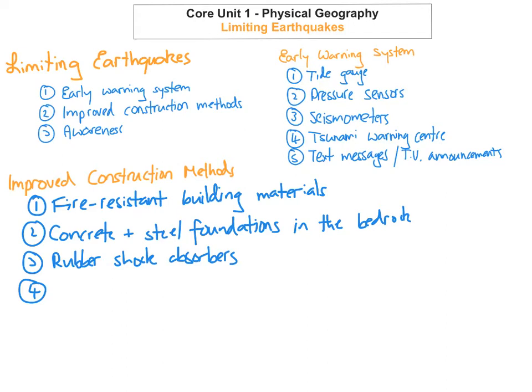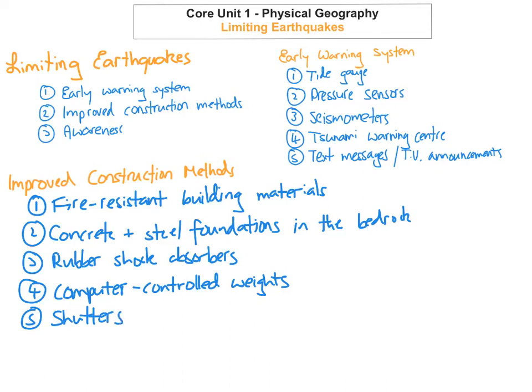The fourth way is having computer-controlled weights on the top of roofs to reduce movement of the building during an earthquake. Buildings also have shutters that automatically come down in front of the panes of glass to stop any glass from falling and injuring people below.